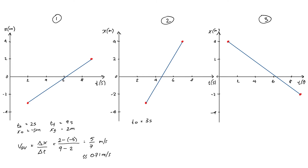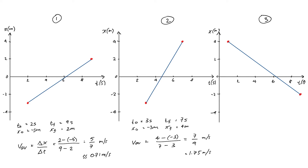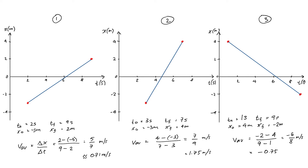For the third graph, we'd expect a similar magnitude to the first but negative because it slopes downward. With t₀ = 1, tf = 9, x₀ = 4, xf = −2: average velocity = (−2 − 4) / (9 − 1) = −6/8 ≈ −0.75 m/s, which is close to −0.71 as expected.